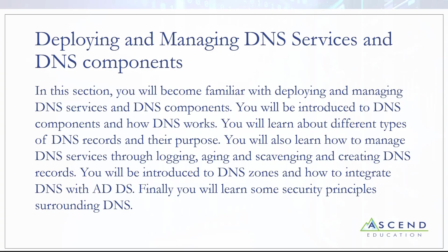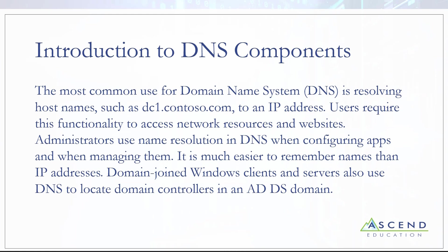Now let's talk about DNS. Domain Name System is what makes Active Directory work — it resolves names to IP addresses using zones. For instance, microsoft.com or contoso.com are zones. The most common use is resolving a name like DC1 to an IP address like 192.168.0.10. It's easier to remember a name than an IP address, and IP addresses can change. When you go to Google.com today and tomorrow, it may be a different IP address because a different server may respond faster, and DNS directs you to the fastest server.